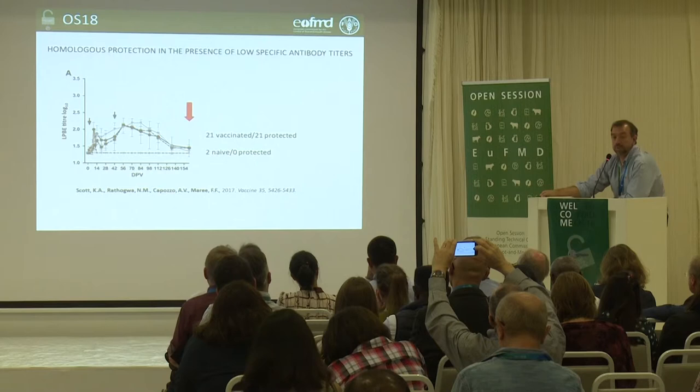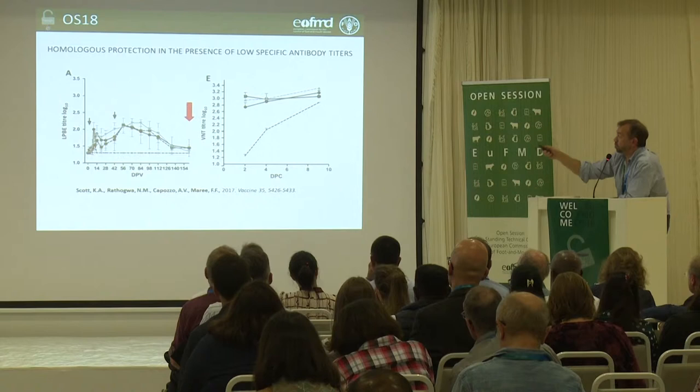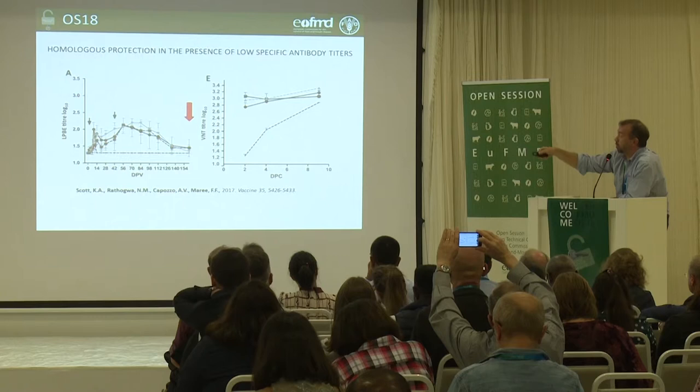This is a kind of magic because we don't have enough antibodies to predict that they will be protected. When you see what happens after the infection, the naive animals really show a slow development of antibodies compared with the vaccinated.